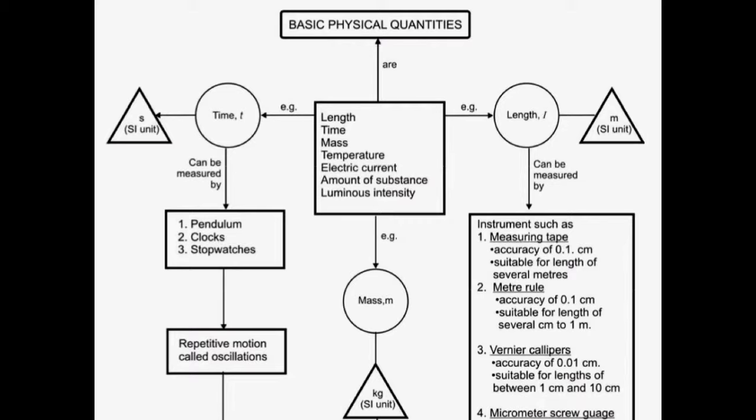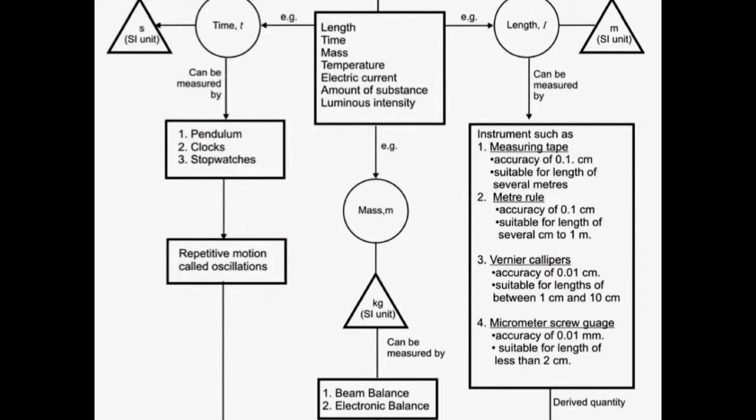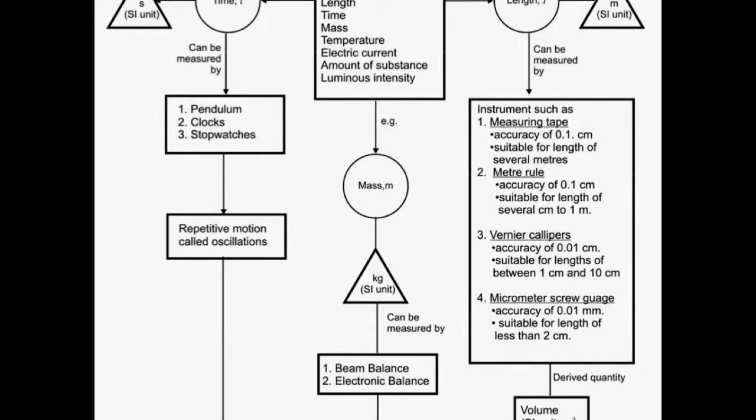A basic physical quantity, for example Time (t), has SI unit s and can be measured by: 1. Pendulum, 2. Clocks, 3. Stopwatches. These use repetitive motion called oscillations.